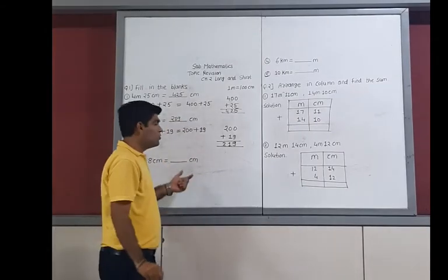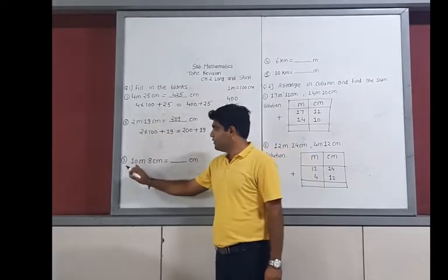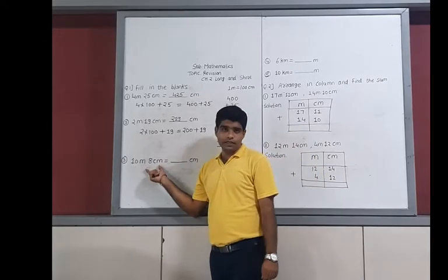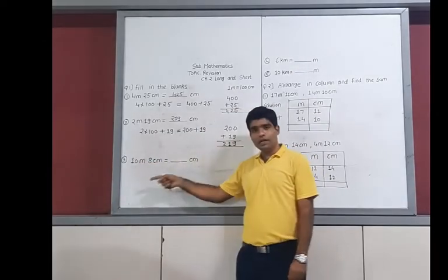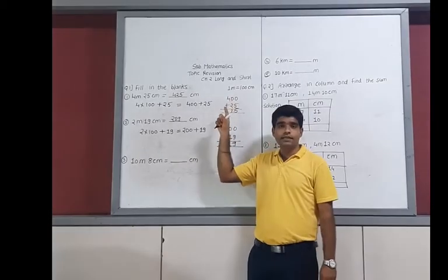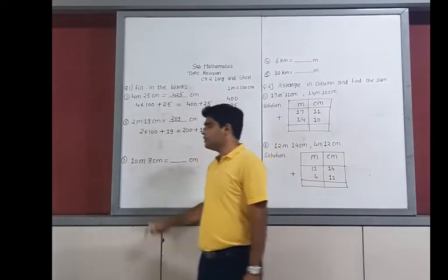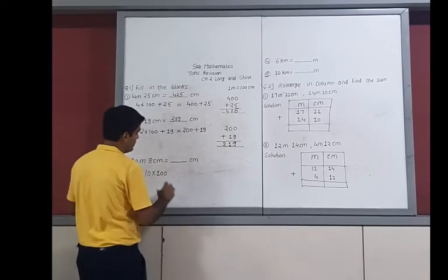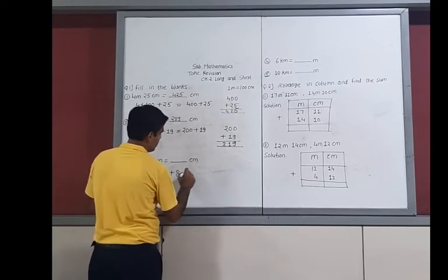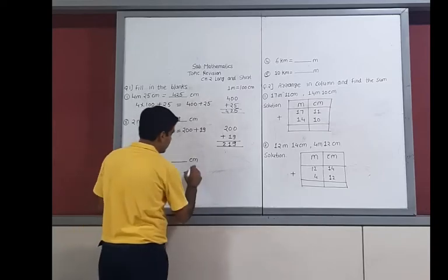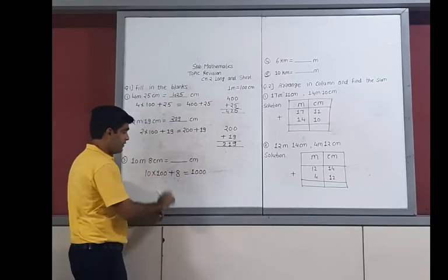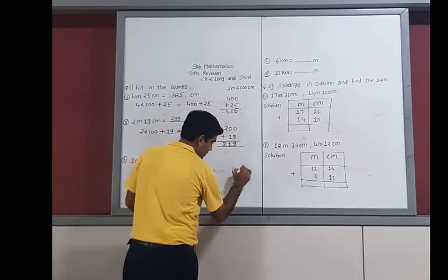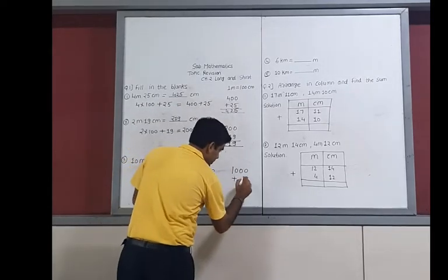Similarly, we solve the third example. Here: 10 meters 8 centimeters is to be converted into centimeters. The 8 centimeters is already given, and we only need to convert 10 meters into centimeters. 1 meter equals 100 centimeters, so here will be 10 multiplied by 100, which gives 1000, and then add 8.